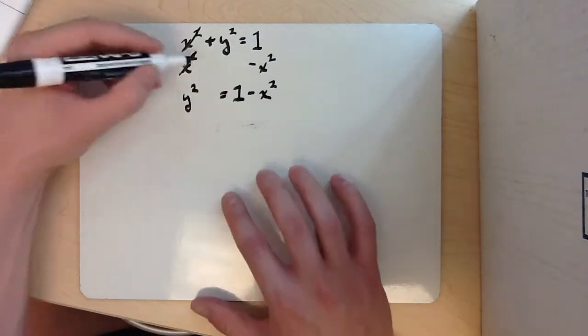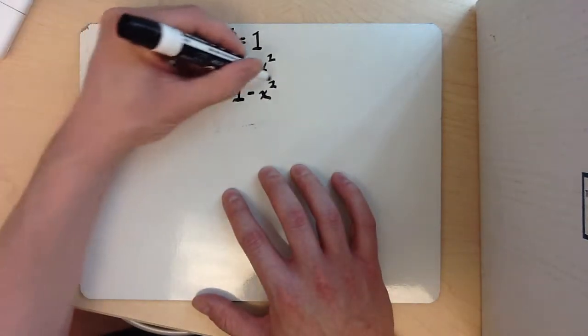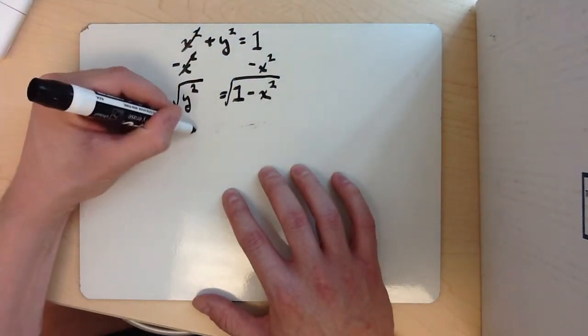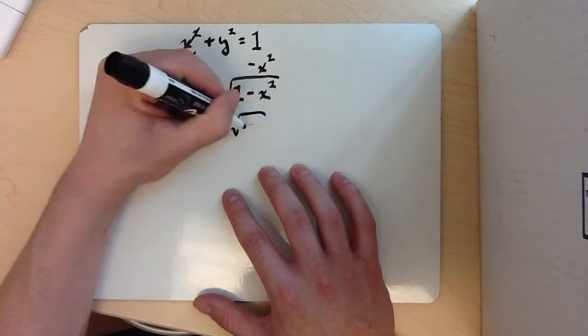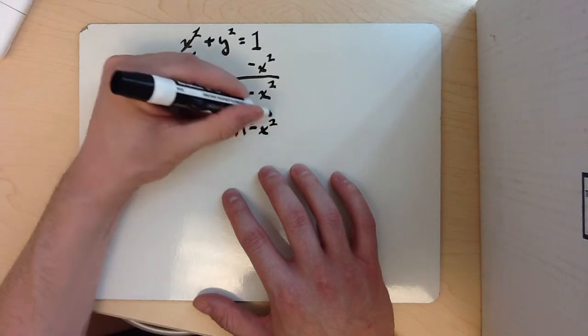To get rid of this squared right here, we're going to do a square root on both sides. And you'll end up with y is equal to plus or minus the square root of 1 minus x squared.